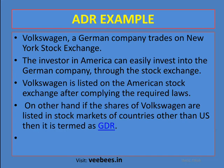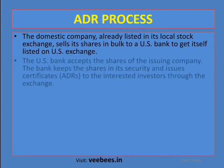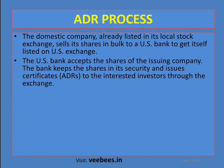The ADR process is similar to GDR. The domestic company, already listed on a local stock exchange, sells shares in bulk to a US depository bank to get listed in the US stock exchange. The depository bank accepts the shares and keeps them, then issues ADRs to interested investors through the stock exchange.